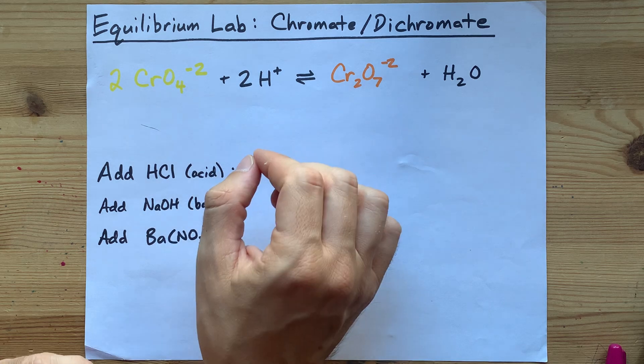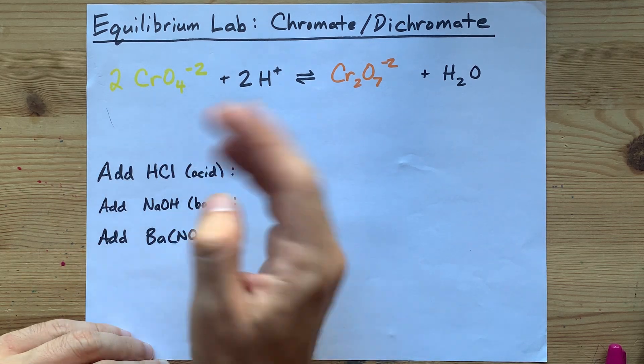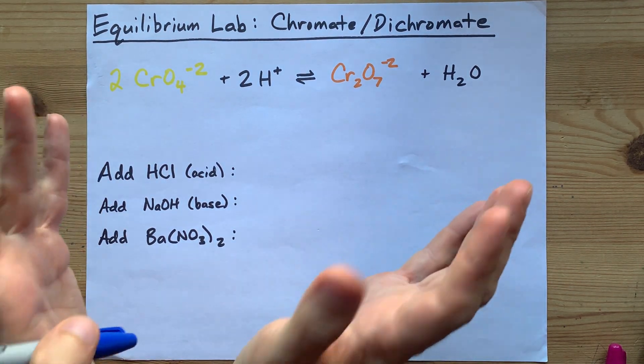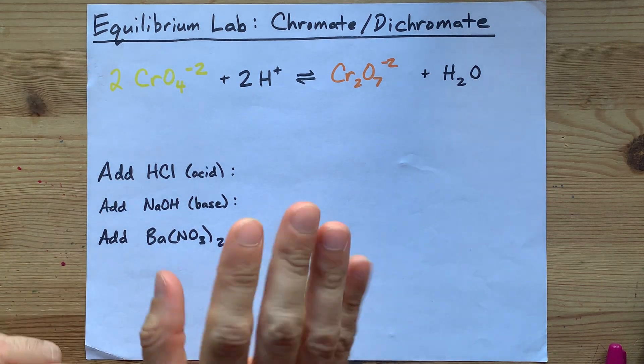Le Chatelier's principle says that when a system at equilibrium is disturbed, it will react to partially offset the change.